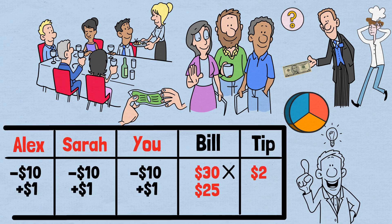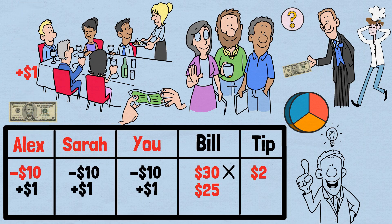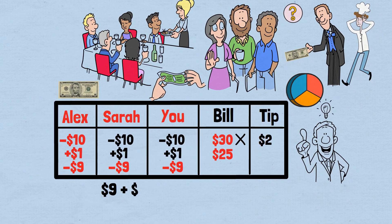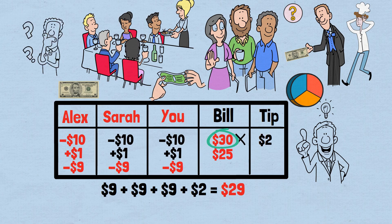Now here's where things get strange. Let's trace through what happened with the money. You each originally paid $10, but got $1 back, so you each effectively paid $9 for lunch. The busboy kept $2 for himself. Total accounted for: $9 plus $9 plus $9 plus $2 equals $29. But you originally paid $30. Where did that missing dollar go?